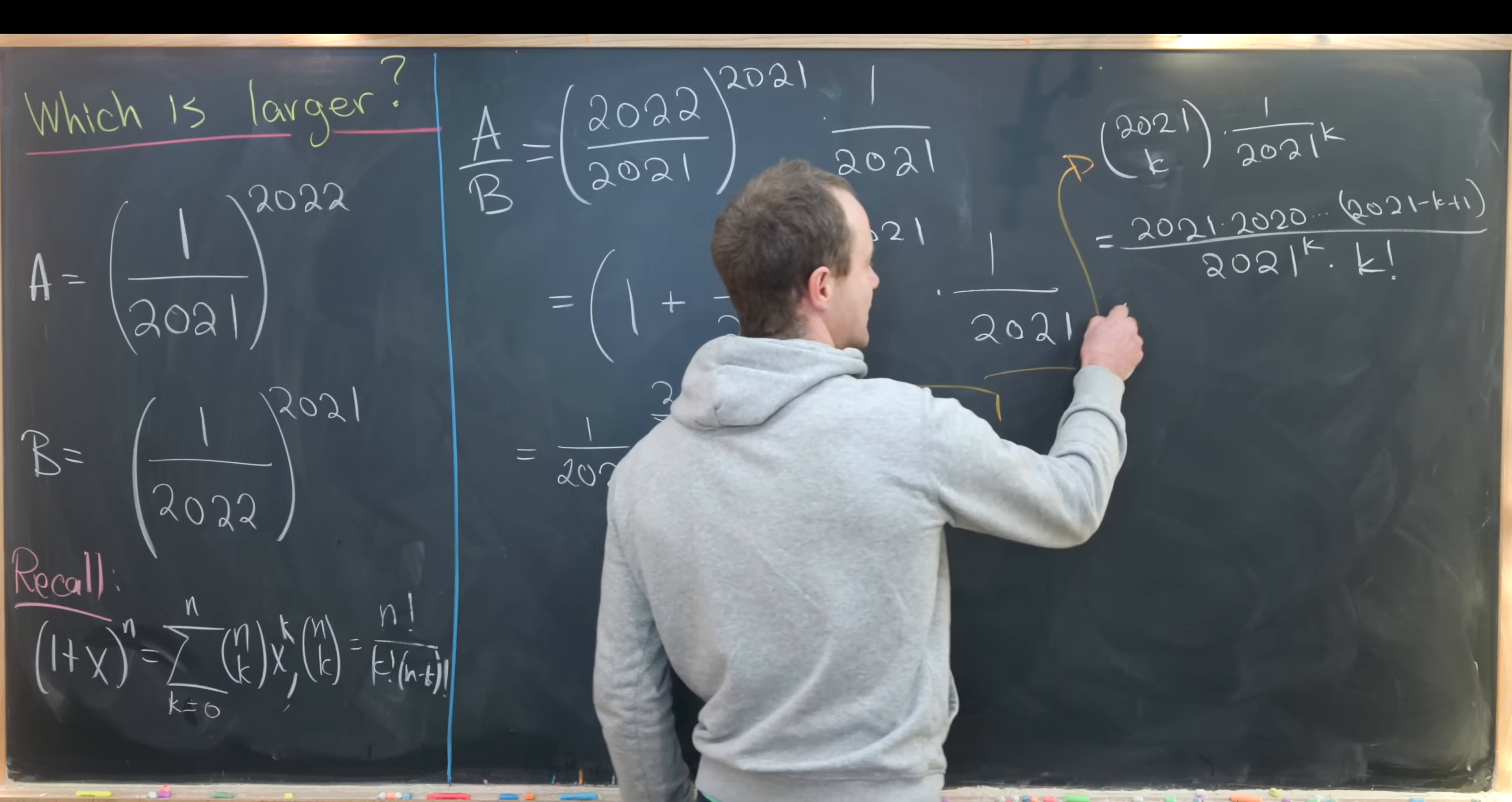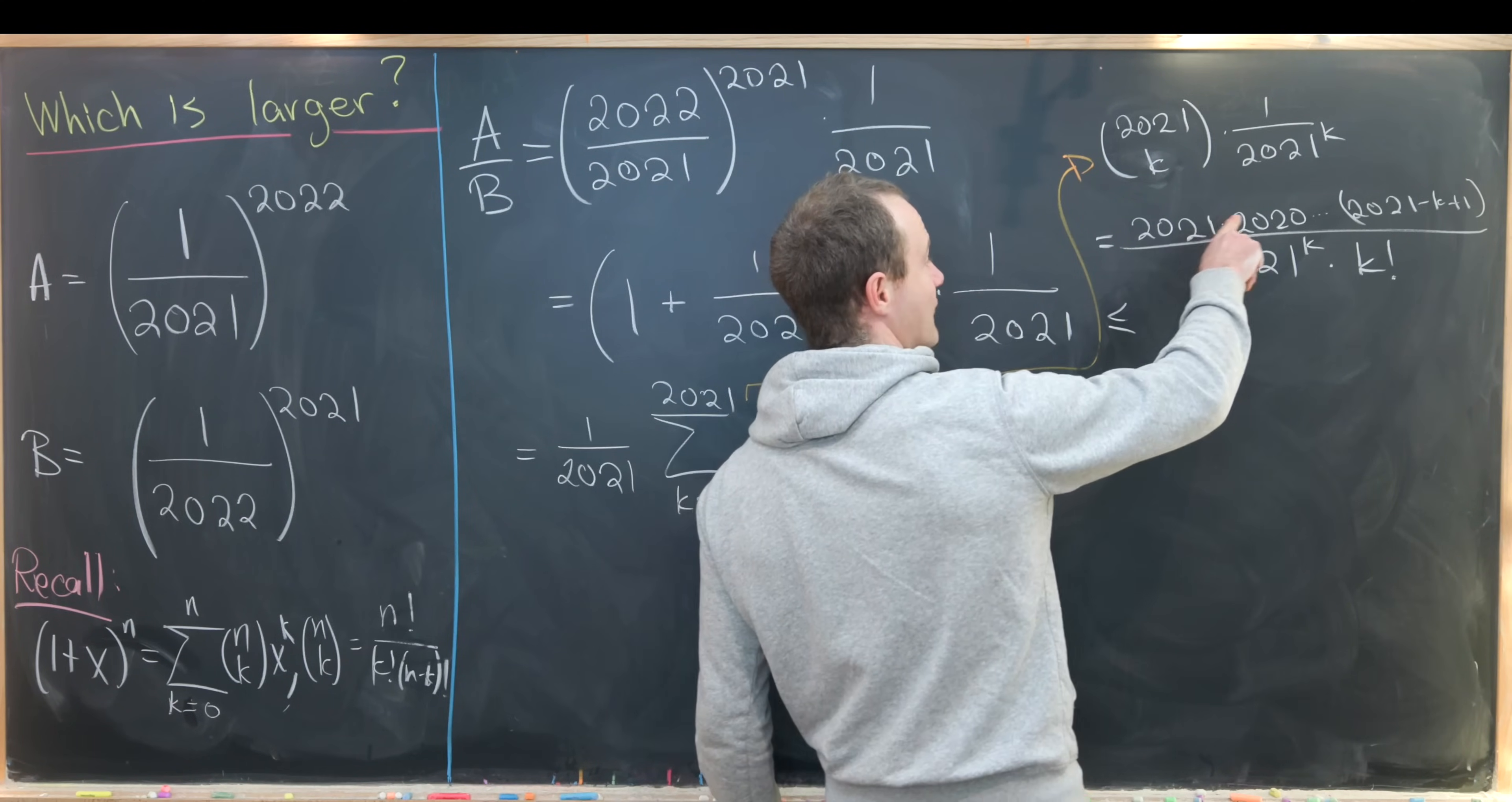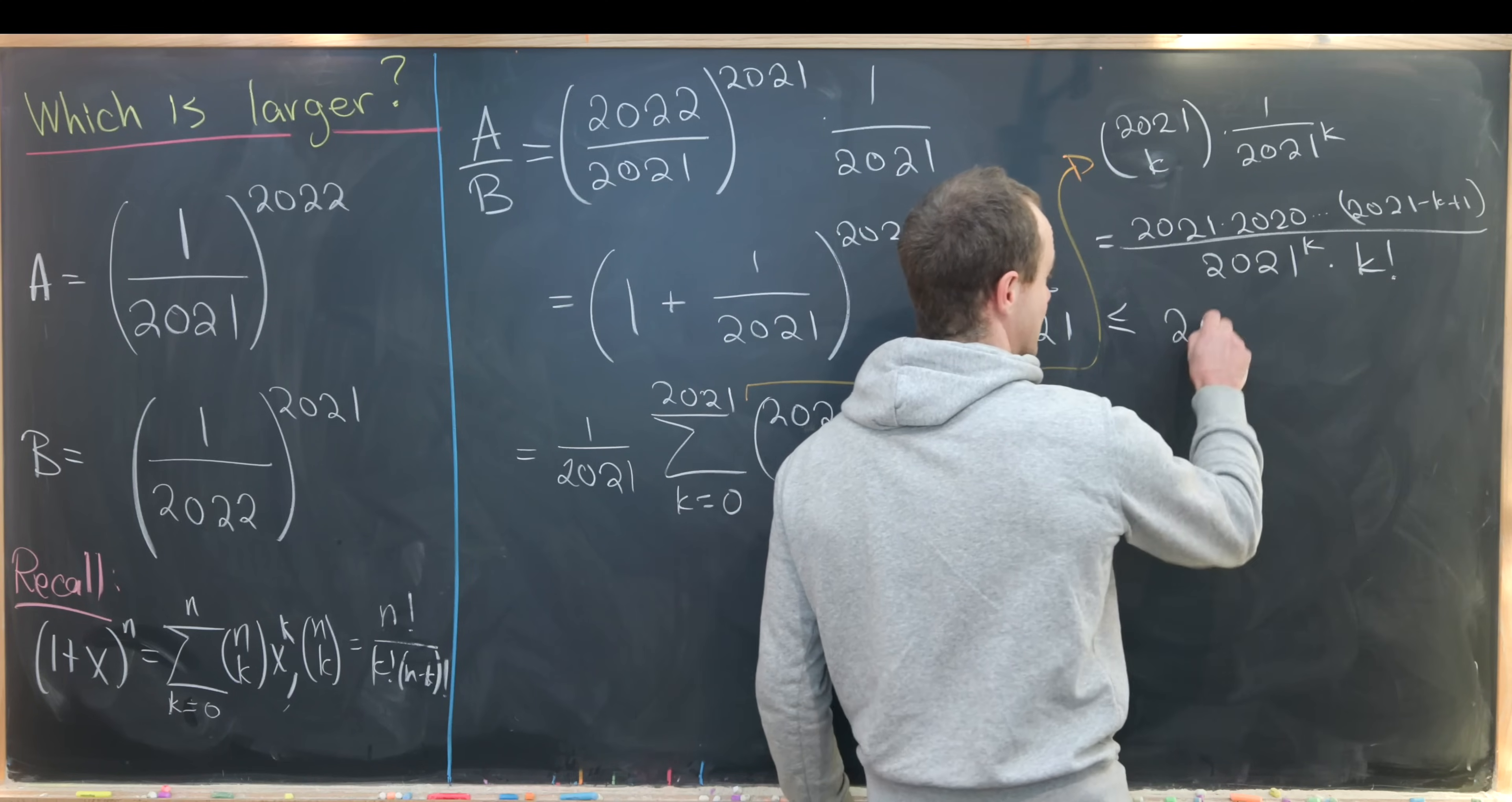But now this is less than or equal to, where the strict inequality occurs for most values of k, than what we have if everything in the numerator is replaced with 2021.